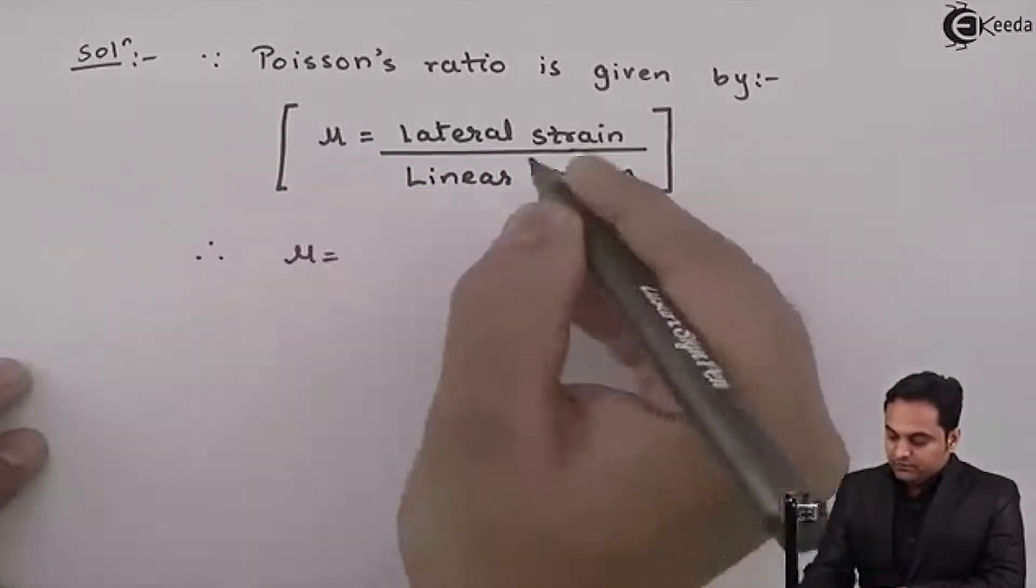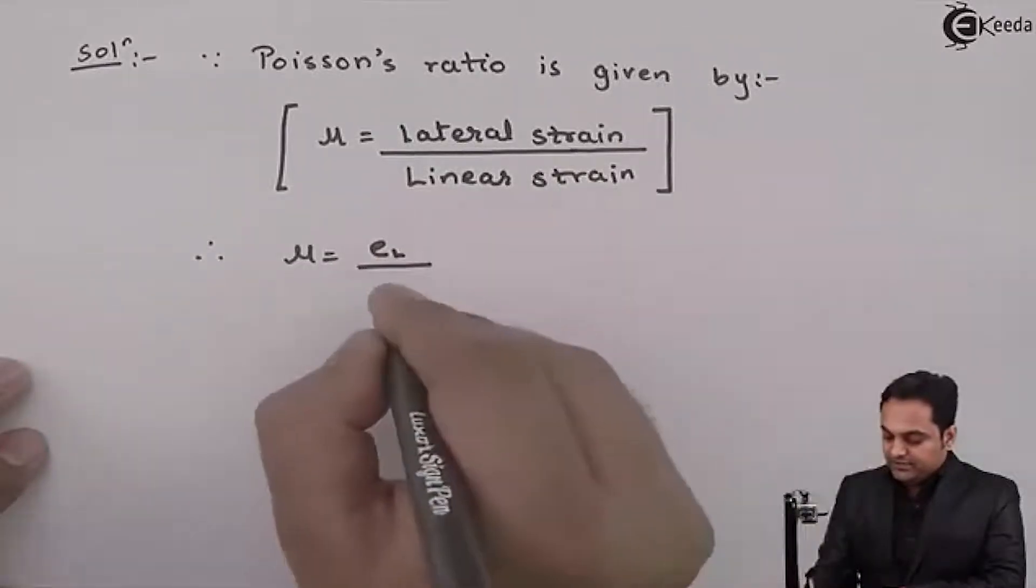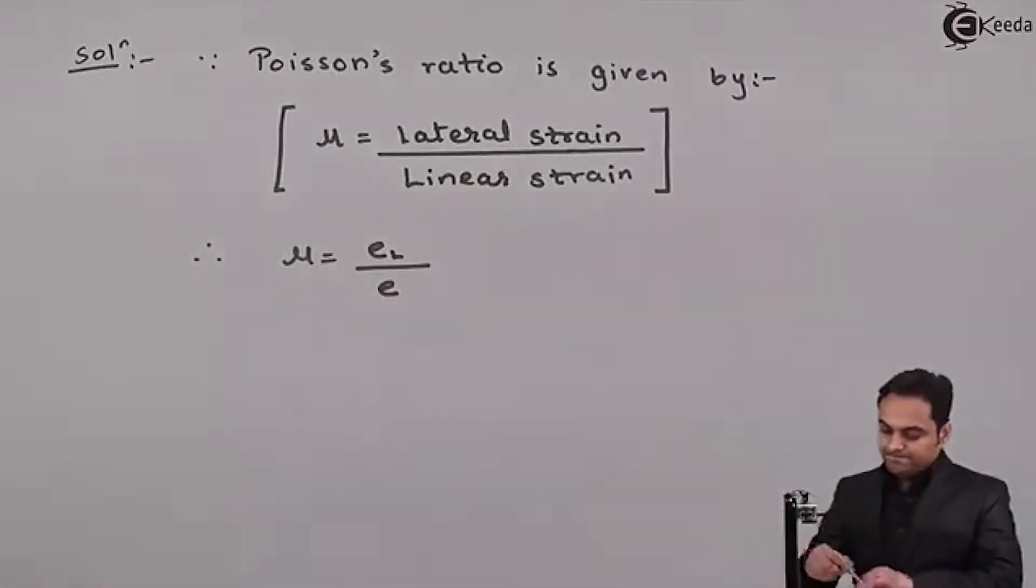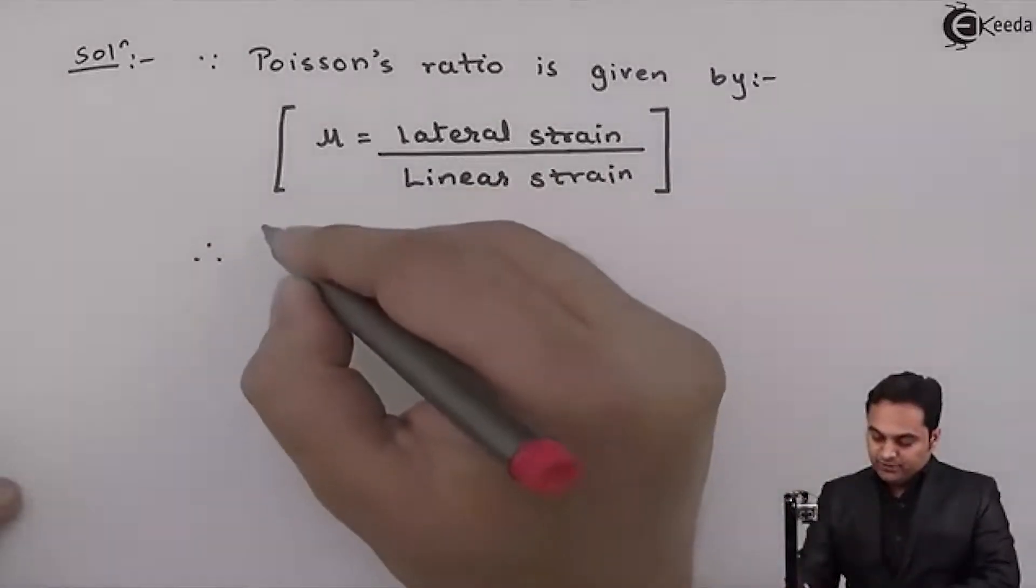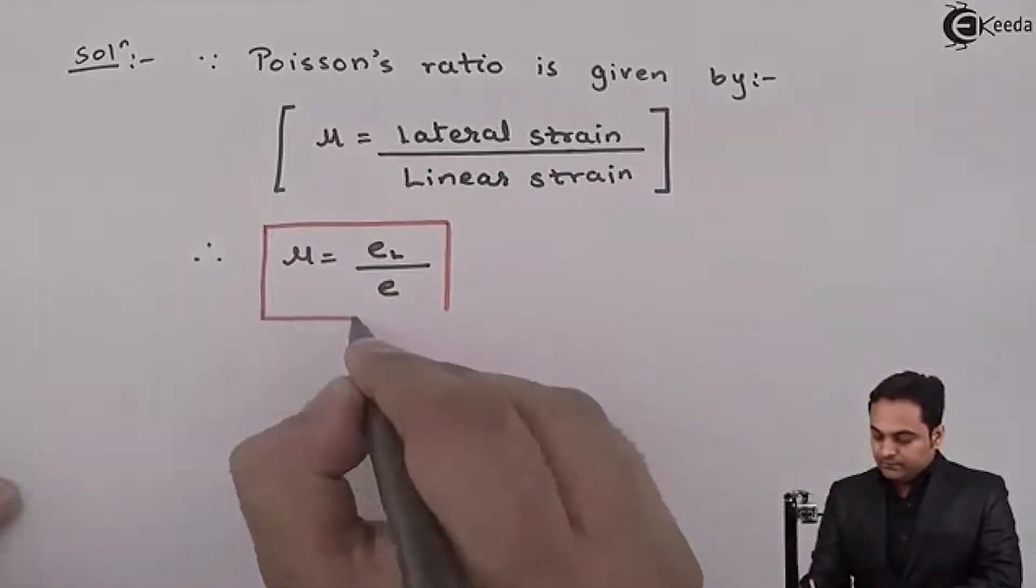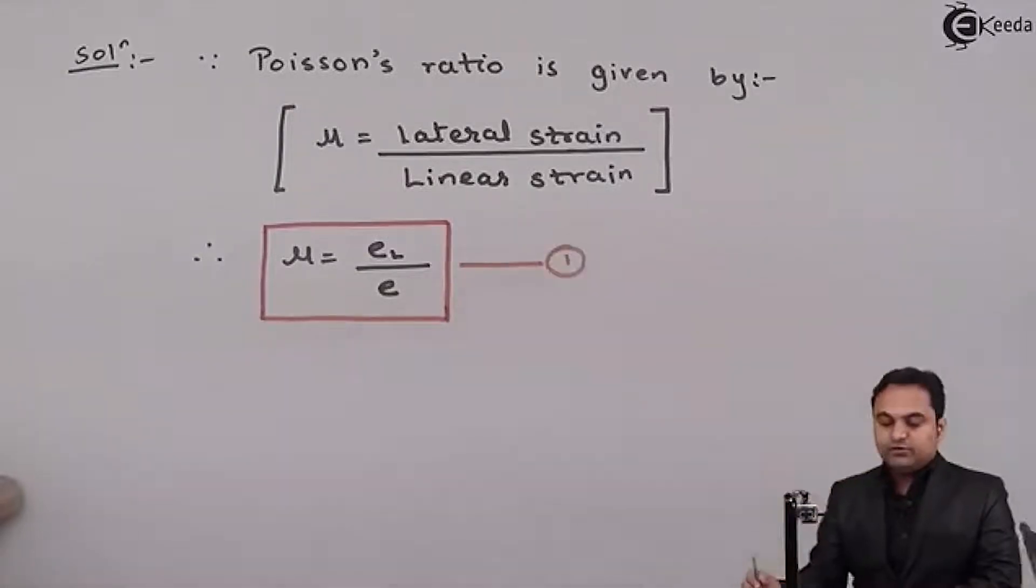Therefore mu is equal to lateral strain, denoted by E suffix L, upon linear strain, denoted by small e. This would be our equation number 1. I'll highlight this and it becomes equation number 1 for us.